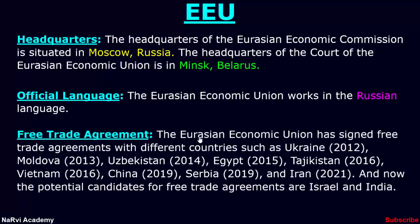The Eurasian Economic Union has signed free trade agreements with different countries: Ukraine signed in 2012, Moldova signed in 2013, Uzbekistan signed in 2014, Egypt signed in 2015, Tajikistan signed in 2016, Vietnam also signed in 2016, China signed in 2019, Serbia also signed in 2019, and Iran signed in 2021. The potential candidates for free trade agreements are Israel and India.